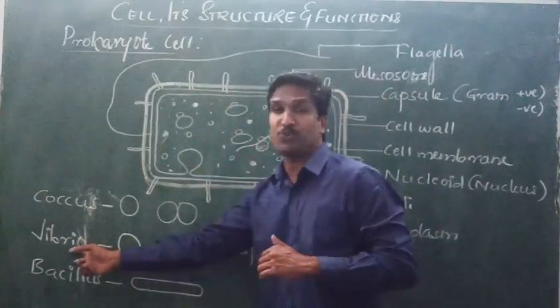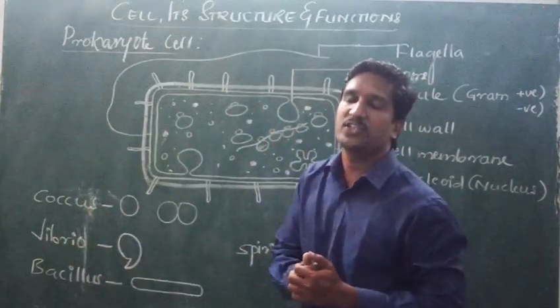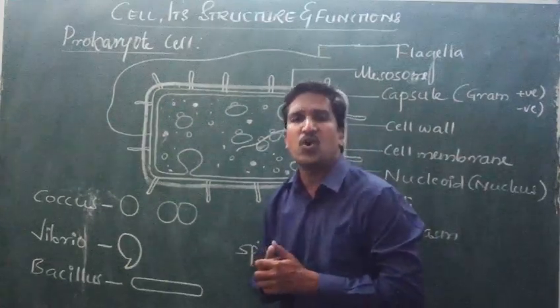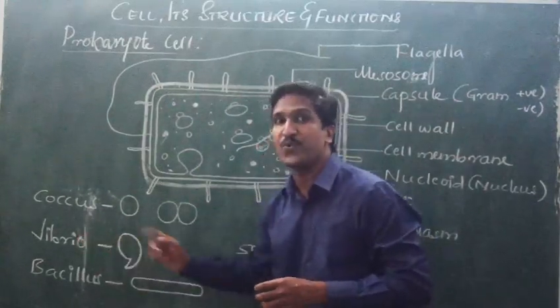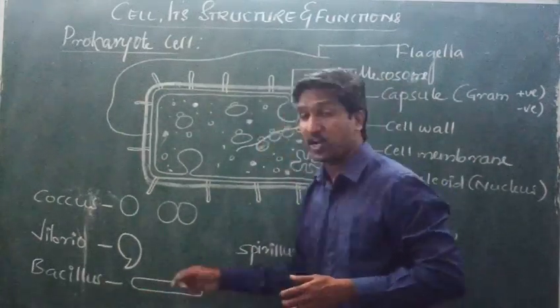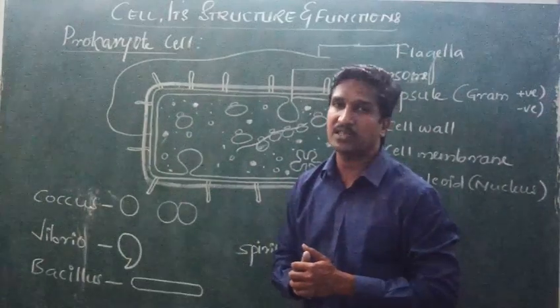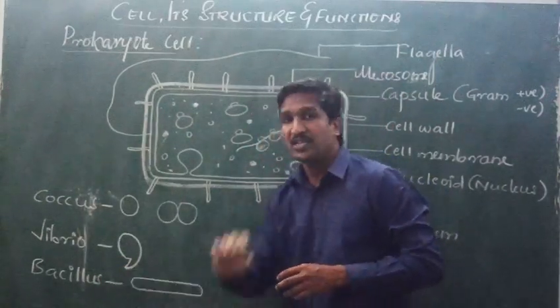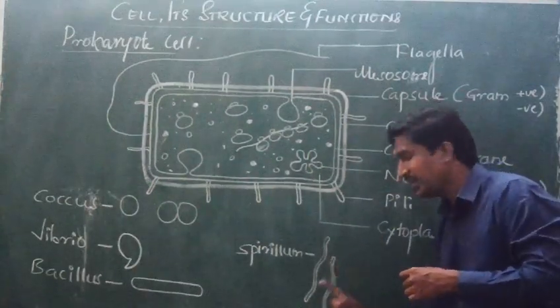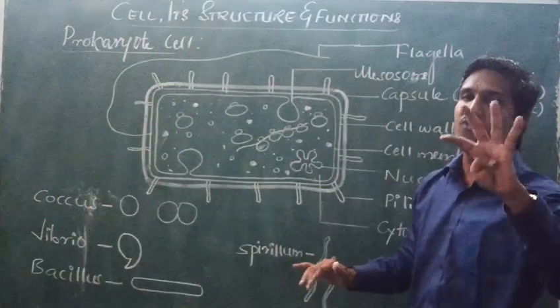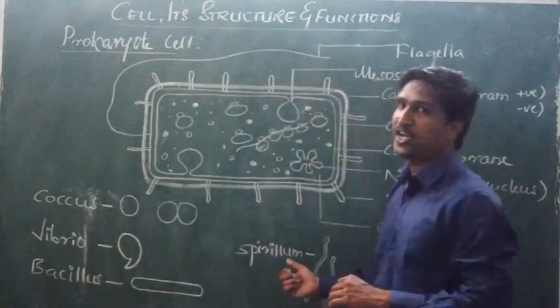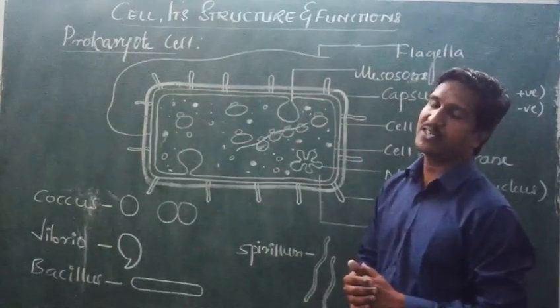The second one is vibrio, a bacteria which causes cholera. Vibrio is comma-shaped bacteria. The third one is bacillus, like lactobacillus bacteria, whose shape is rod-shaped. Some bacteria have a spring-like spiral shape called spirillium. So bacteria are of four types based on shape: coccus, vibrio, bacillus, and spirillium.